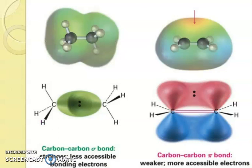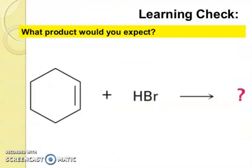So, you can see carbon-carbon sigma bond is stronger, less accessible bonding electrons, but carbon-carbon double bond is weaker, more accessible electrons.